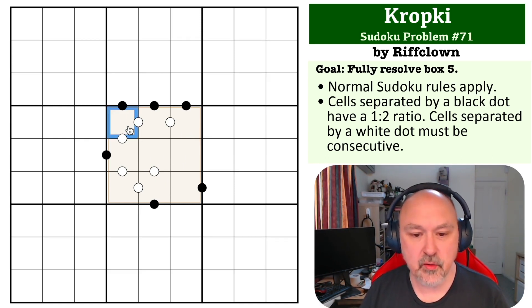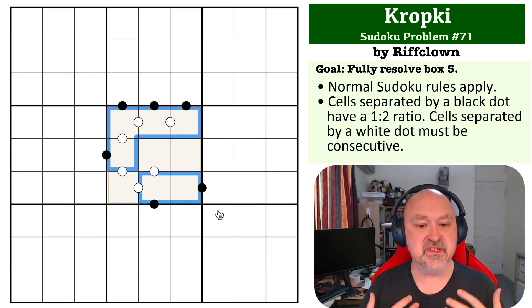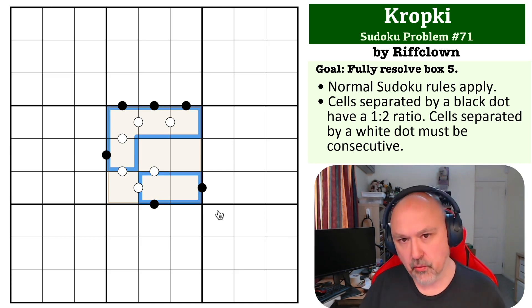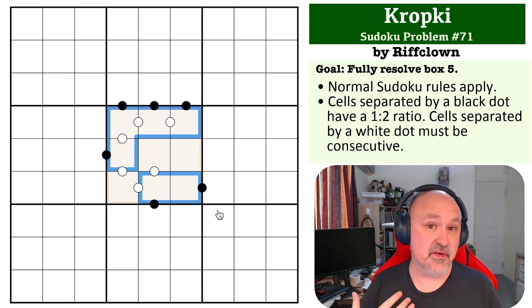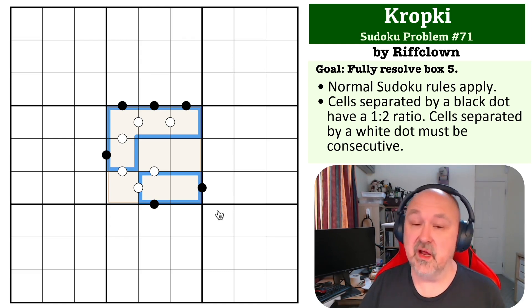But if we look at a lot of the cells in box five, all of those cells that I've highlighted are on black dots. Now we know that box five is going to contain all of the digits from one to nine, but there are three digits that you can never place on a black dot in a Sudoku grid: those are five, seven, and nine. And the reason for that is they've got no partner. A five, if you doubled it, it is ten; if you halved it, it's two and a half. Seven doubled is fourteen, halved is three and a half. And nine doubled is eighteen and halved is four and a half. All of those don't work.